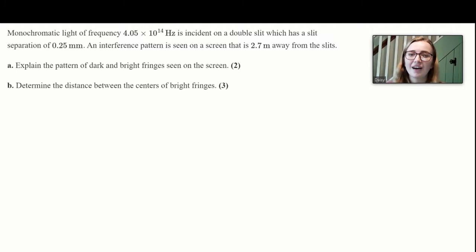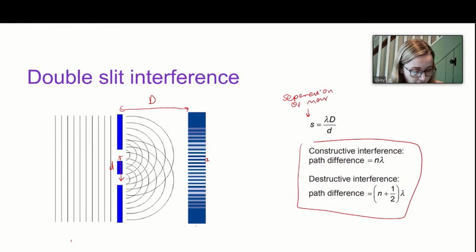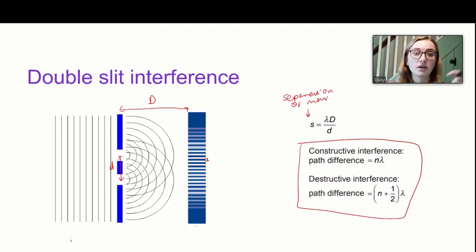The question tells us monochromatic light of frequency 4.05 × 10¹⁴ Hz is incident on a double slit with a slit separation of 0.25 mm, and an interference pattern is seen on a screen 2.7 m away. The first part asks us to explain the pattern of dark and bright fringes. The bright fringes are caused by constructive interference, where the path difference is an integer number of wavelengths. The dark spots are caused by destructive interference, where the path difference is an integer number of wavelengths plus half a wavelength.